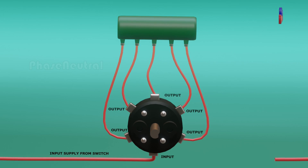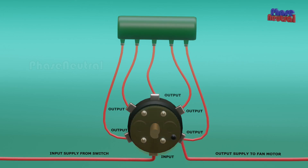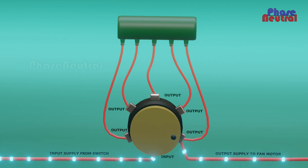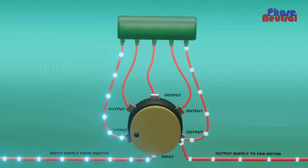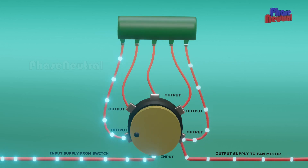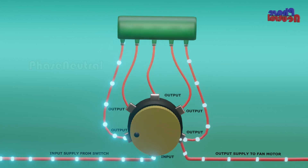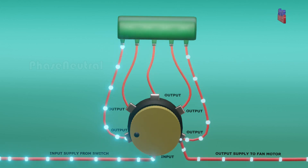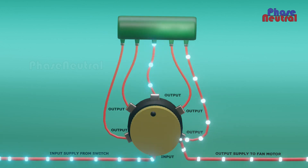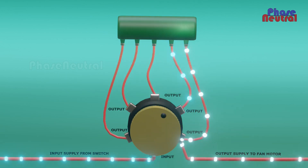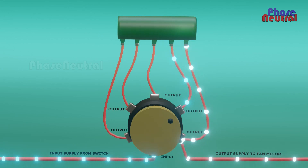Incoming supply connects to the input terminal of the rotary switch, and the outgoing supply connects to the fifth terminal. When the knob is in the fifth position, it is high speed — the current flows directly to the fan motor, so the fan runs at full speed. When the knob is in the first position, the current flows through the full resistance of the multipoint resistor, so the fan motor gets low voltage and runs at low speed. When you move the knob to other speeds, output voltage increases and the fan runs faster due to the change in resistance value.